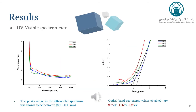UV-visible absorption results have shown that a rise in the calcination temperature causes a red shift in the absorption spectrum and a decrease in the band gap due to an increase in the size of the particles. Calcinating samples at high temperature with a constant concentration of iron are the main parameters responsible for the appearance of a red shift in our results.